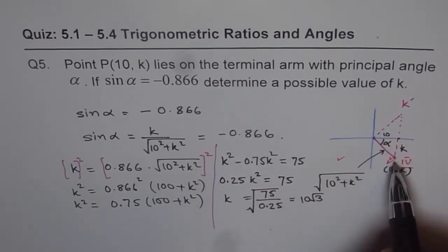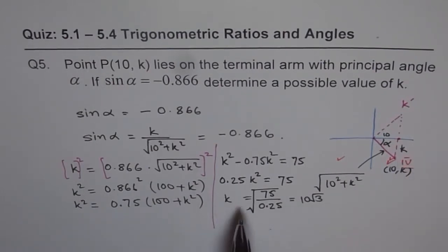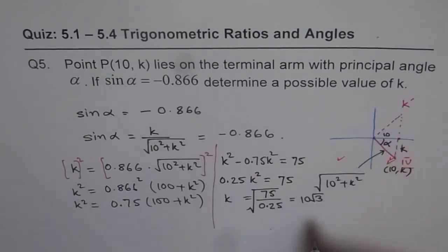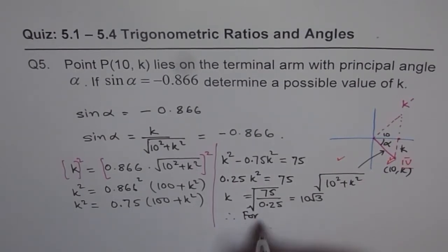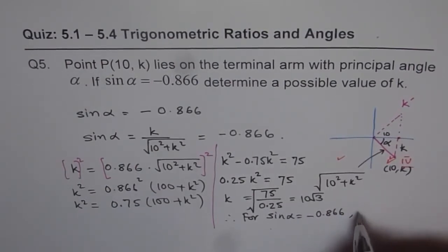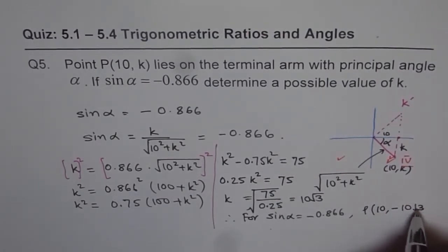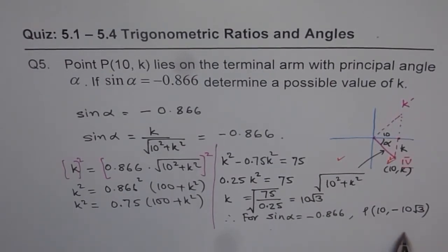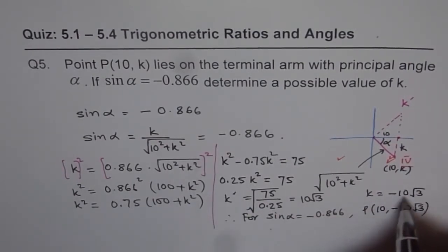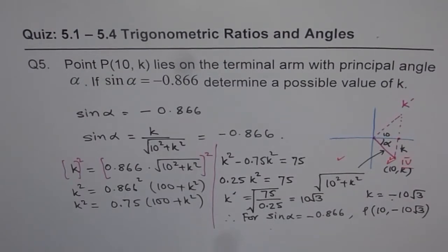We know we are in quadrant 4, and in quadrant 4, k has to be negative. Therefore, for sin alpha equals negative 0.866, the point P should be (10, negative 10√3). So k is basically negative 10√3.